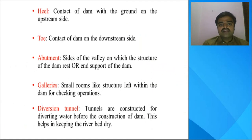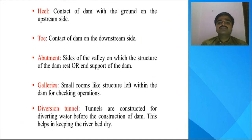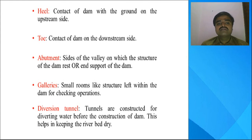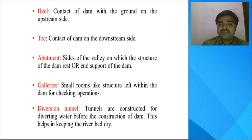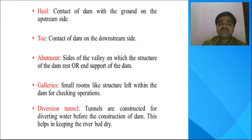The next term is heel and toe. The heel is the contact of the dam with the ground on the upstream side, and the toe is the contact of the dam on the downstream side. These are important features to observe in the cross-sectional figure, which we will study later. The next term is abutment — the sides of the valley on which the structure of the dam rests, or the end support of the dam.